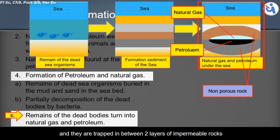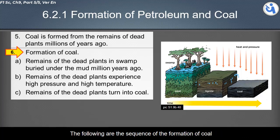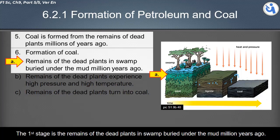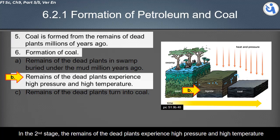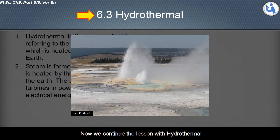The natural gas and petroleum are trapped between two layers of impermeable rocks. About the formation of coal: coal is formed from the remains of dead plants millions of years ago. The first stage: the remains of dead plants in swamps are buried under mud millions of years ago. In the second stage, the remains of the plants experience high pressure and high temperature, and eventually the remains of the dead plants turn into coal.